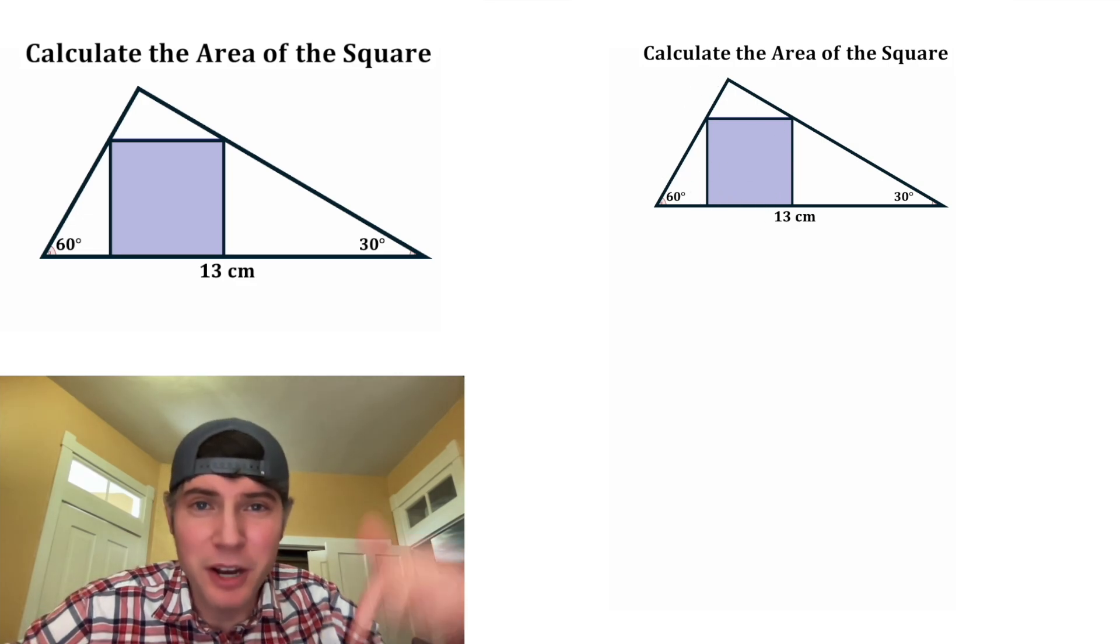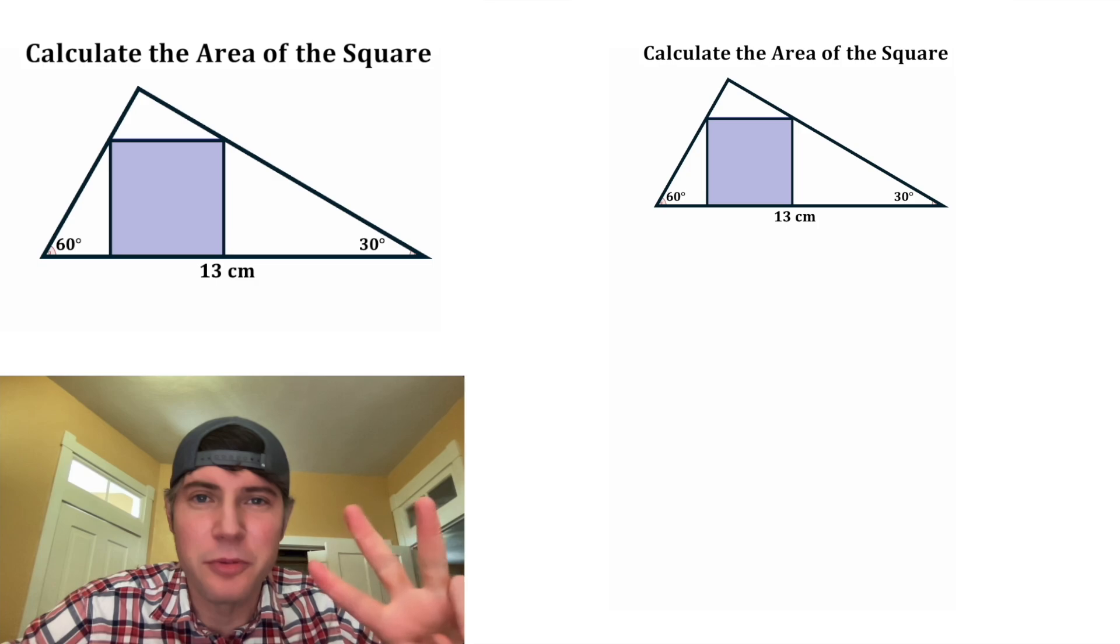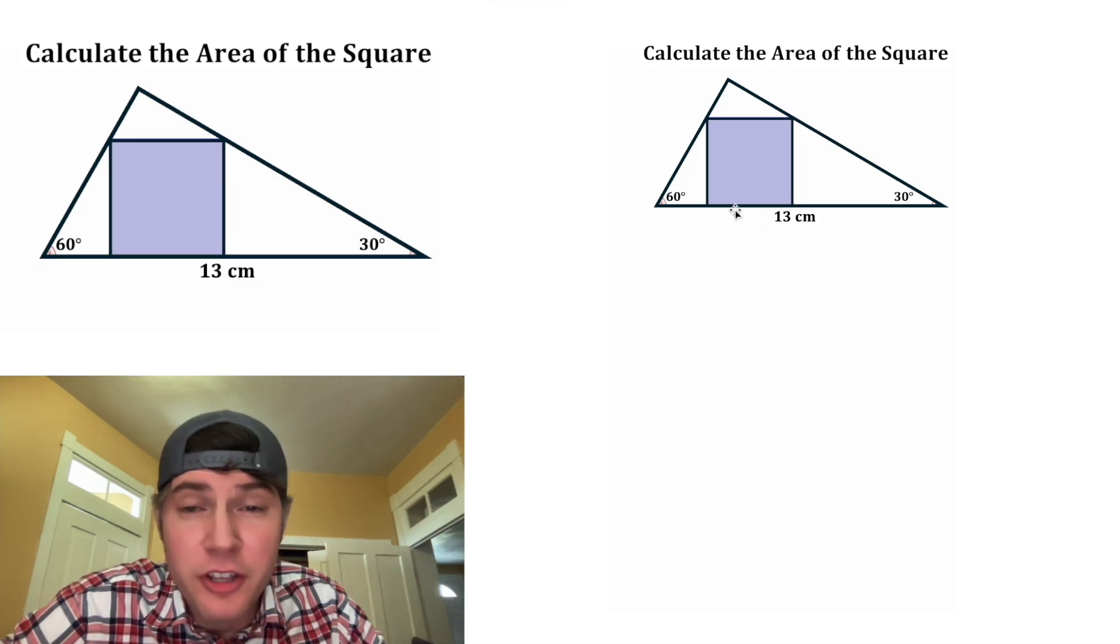If you want to try this on your own, pause it right now, because I'm going to solve it in three, two, one. All the sides of the square are equal to each other. We'll call them X.